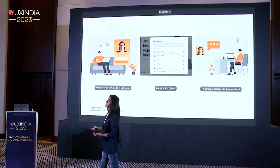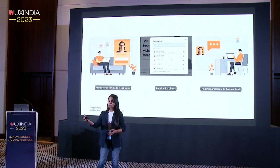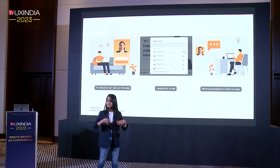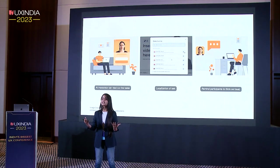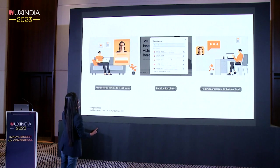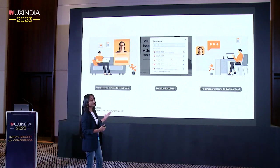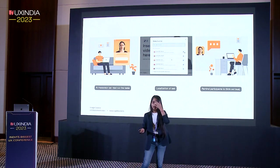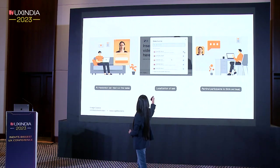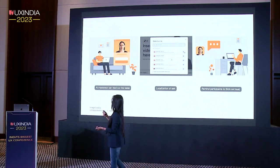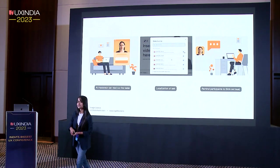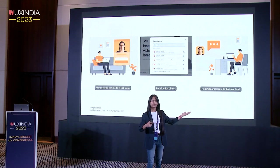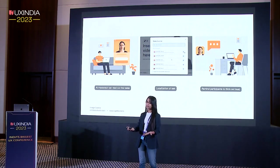What can be done is if we take text and include it with voiceovers, and then these voiceovers can be included with avatars, this whole process can give us AI moderators. AI moderators can help us read the task out loud for the participants so they do not miss anything. Then it can help us localize the test so we can tap into more language options as well as accent options. And third, it can remind participants to think out loud if it feels they have been silent for a really long time.